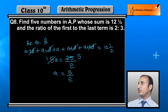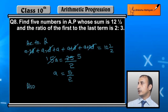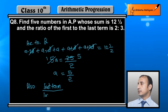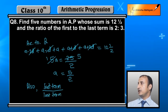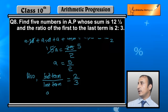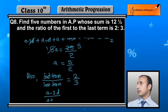Now, a की value 5 by 2 आ गई। Also, we know that first and last term का ratio 2 is to 3 था। First term upon last term equals 2 upon 3। First term हमारी a minus 2d थी and last term a plus 2d थी, so a minus 2d upon a plus 2d is equal to 2 upon 3।